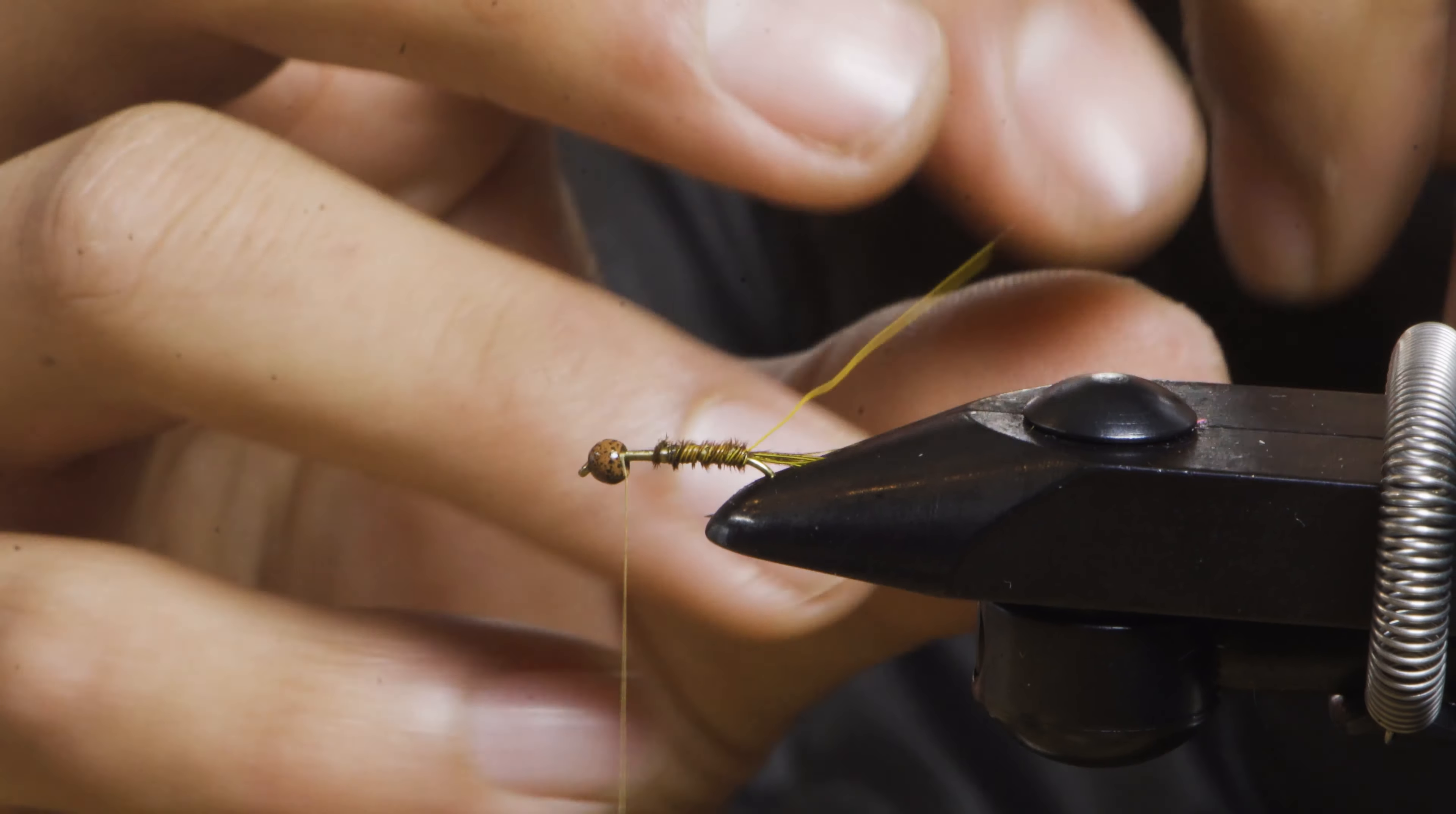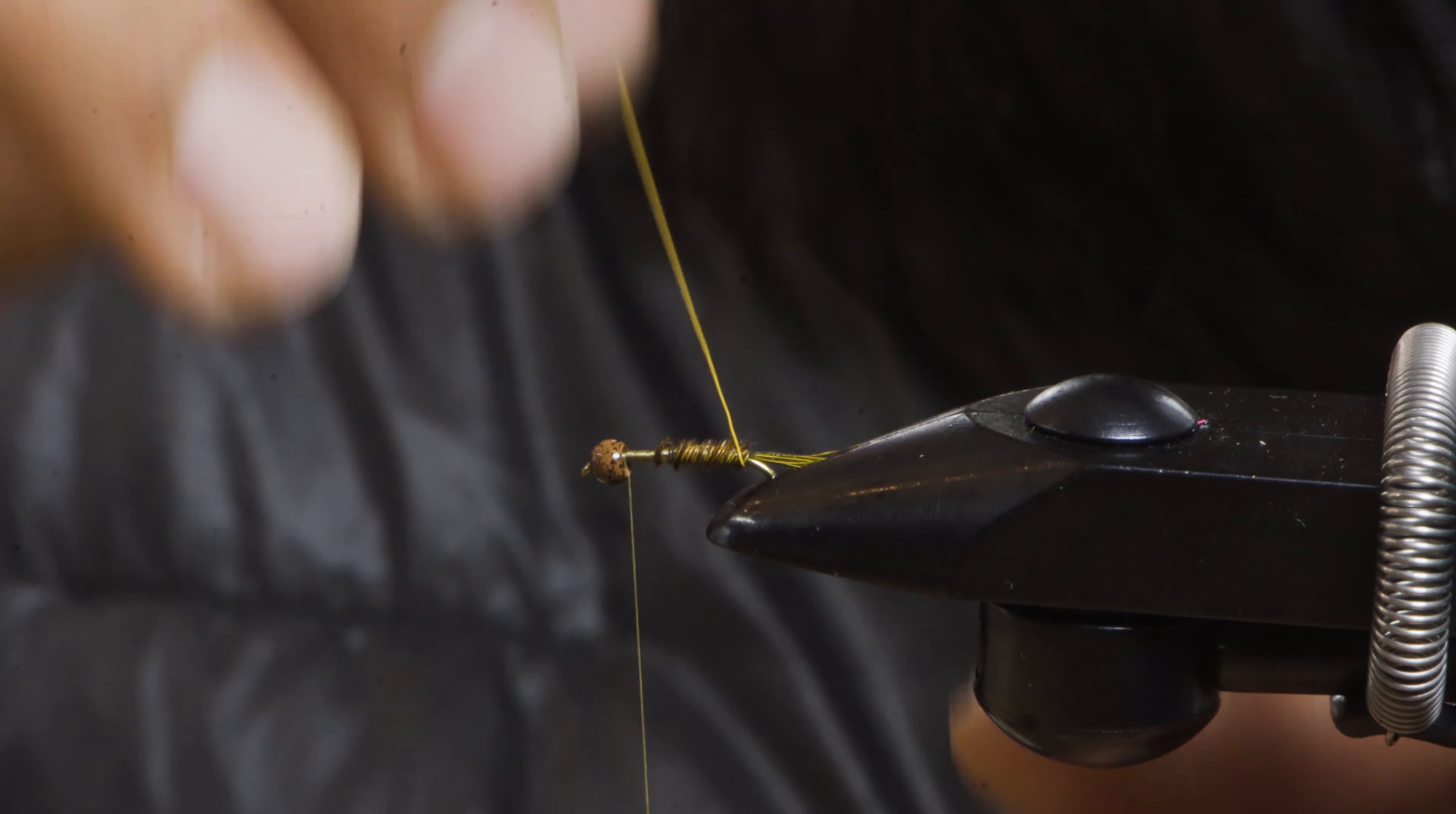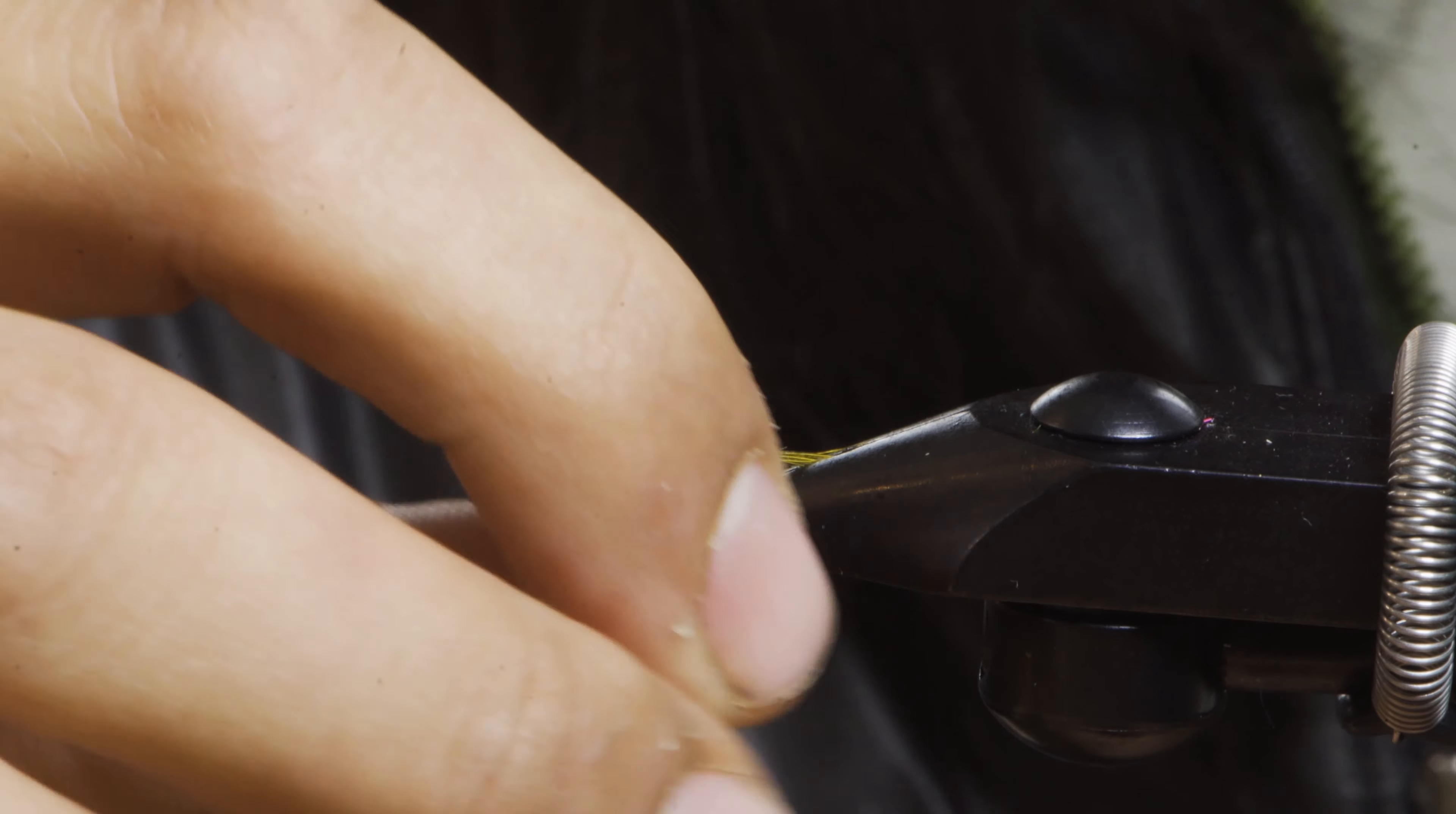Now with my wire I'm going to reverse wrap in the opposite direction I wrapped my pheasant tail just to increase durability. For this I usually just do it by hand. You can still use the rotary function on your vise. Just want to make sure your spacing is fairly even.